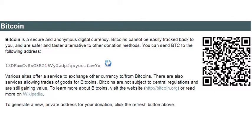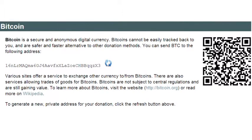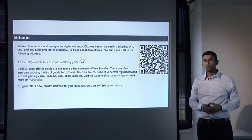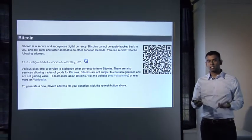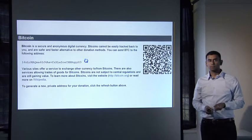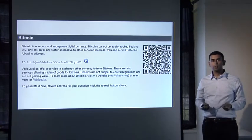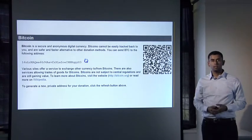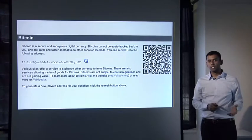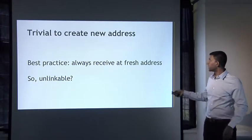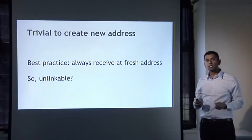What do you imagine this refresh button might do? As you might expect, if you click on that refresh button, it'll give you an entirely new donation address. A totally new address popped up on the page. What Wikileaks is doing is making sure that each time a person wants to visit the page and make a donation, they send that donation to a totally new public key that Wikileaks creates just for that purpose. This is the Bitcoin best practice for anonymity: to always receive new transactions at a fresh address.